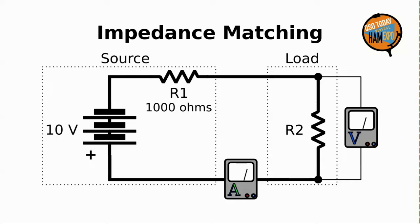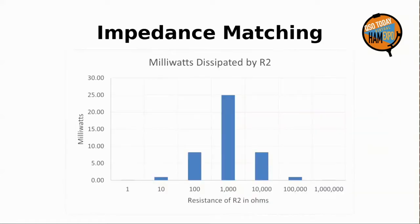We're not going to go through all the calculations here today. With this setup, the maximum power transfer will occur when R2 equals 1000 ohms. Here's a graph of the results at various resistances for R2 — there's a pretty dramatic peak when we hit a matching value. So power transfer is one reason we want to match impedances.